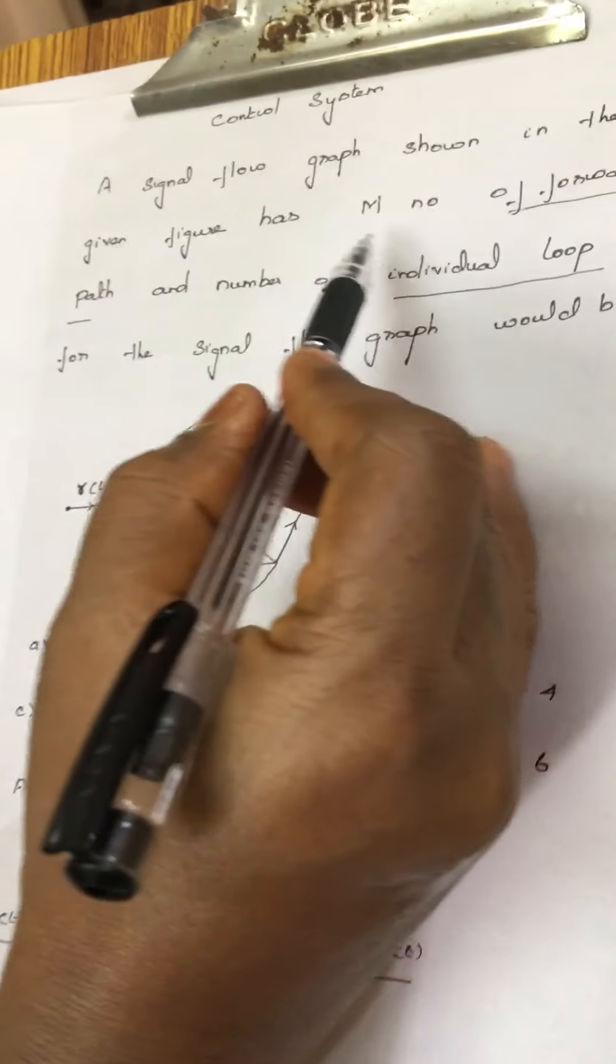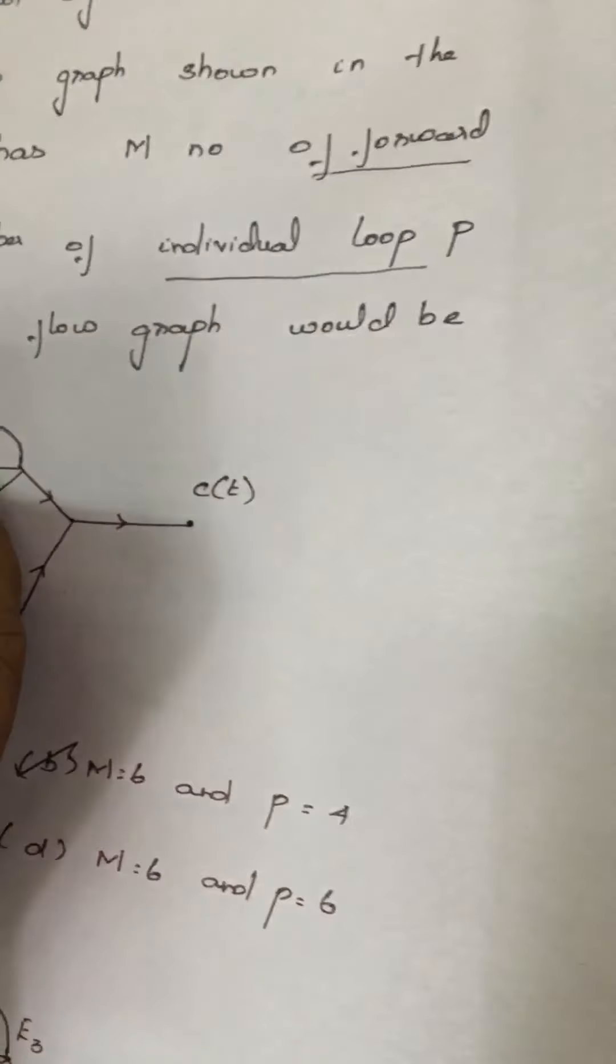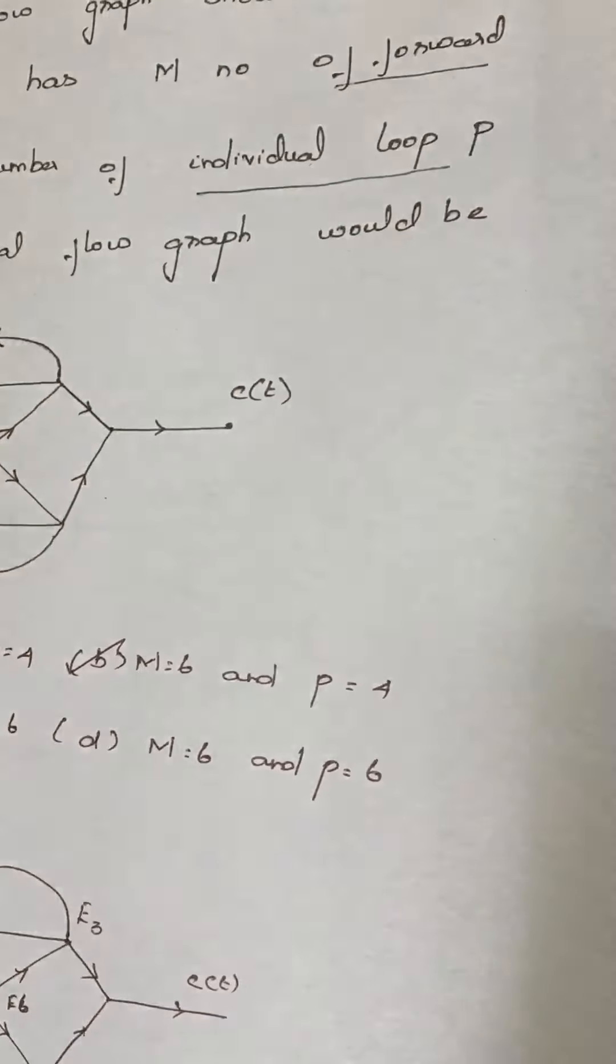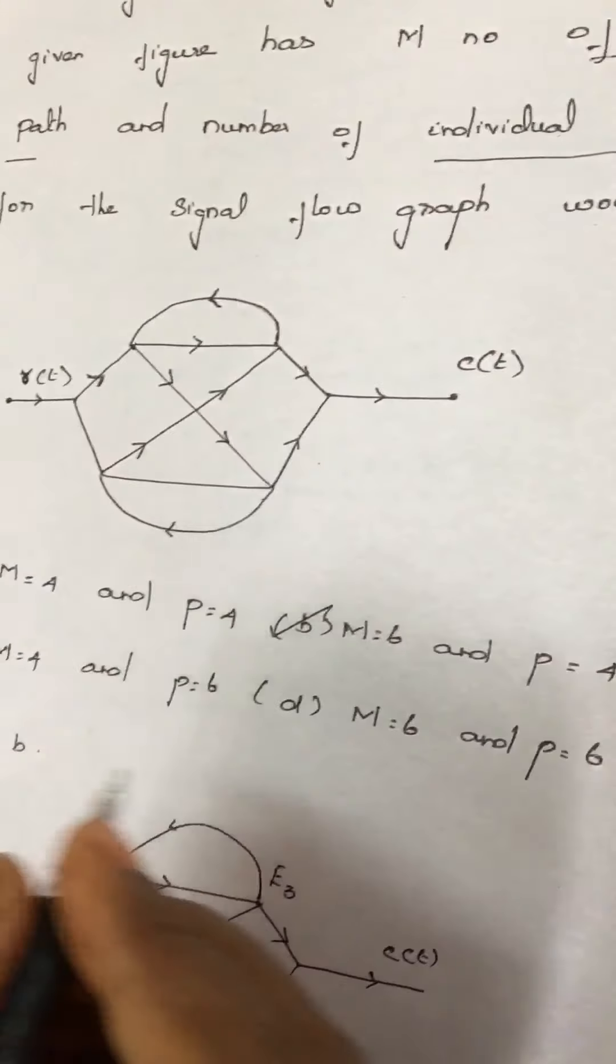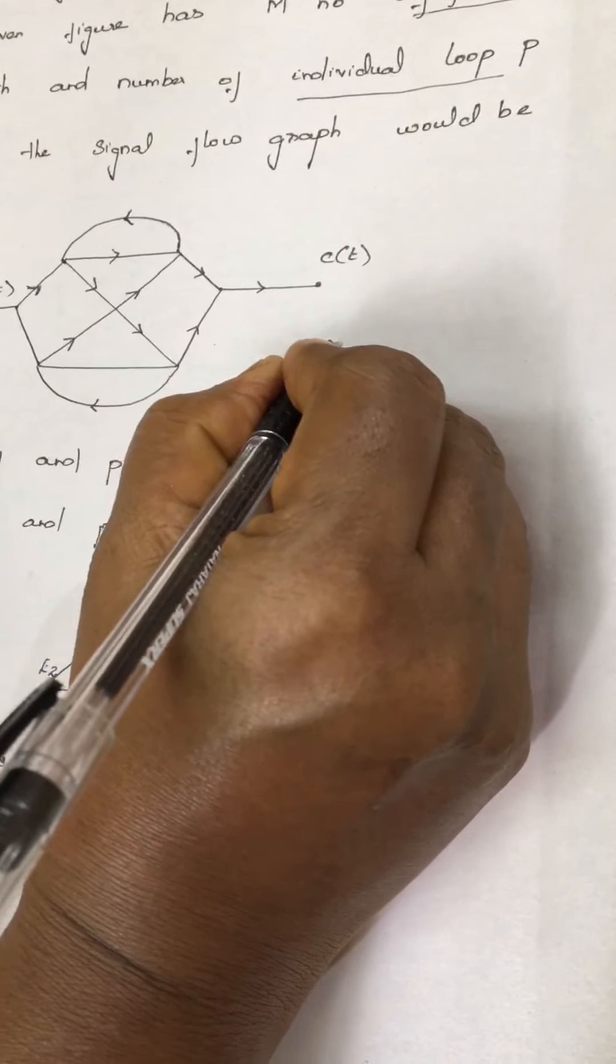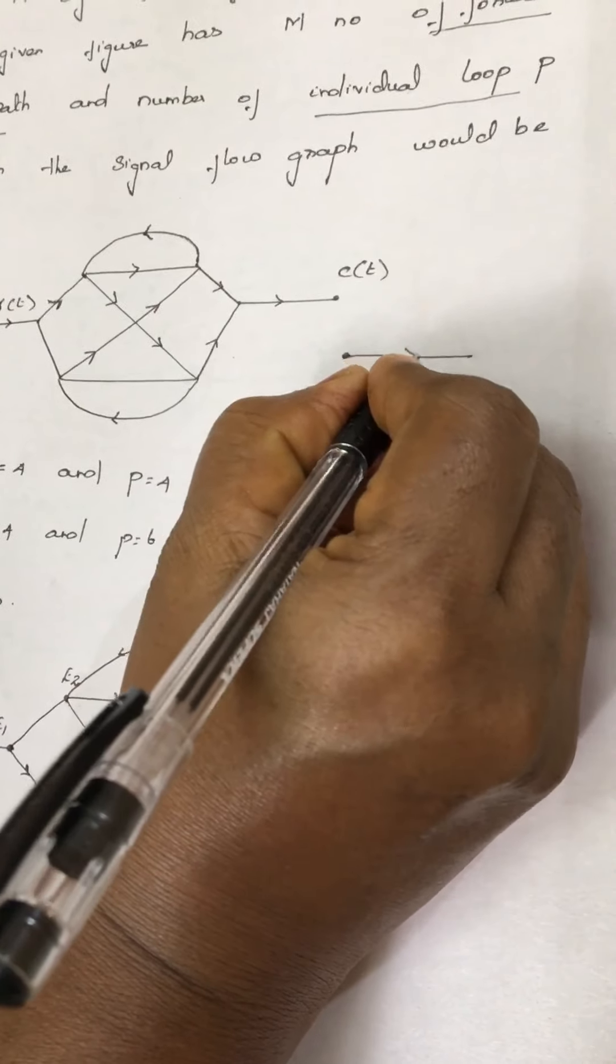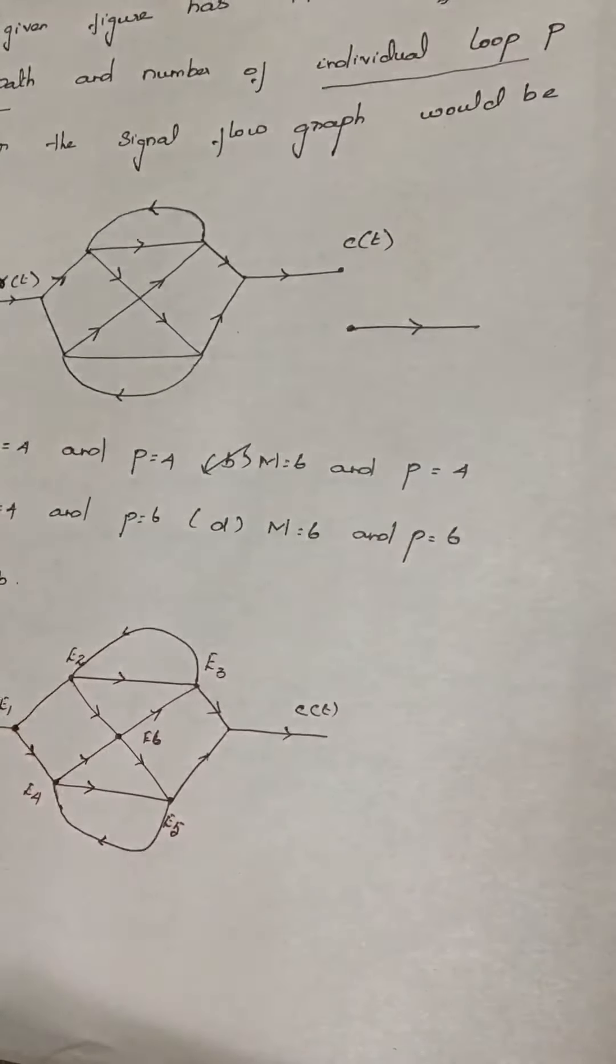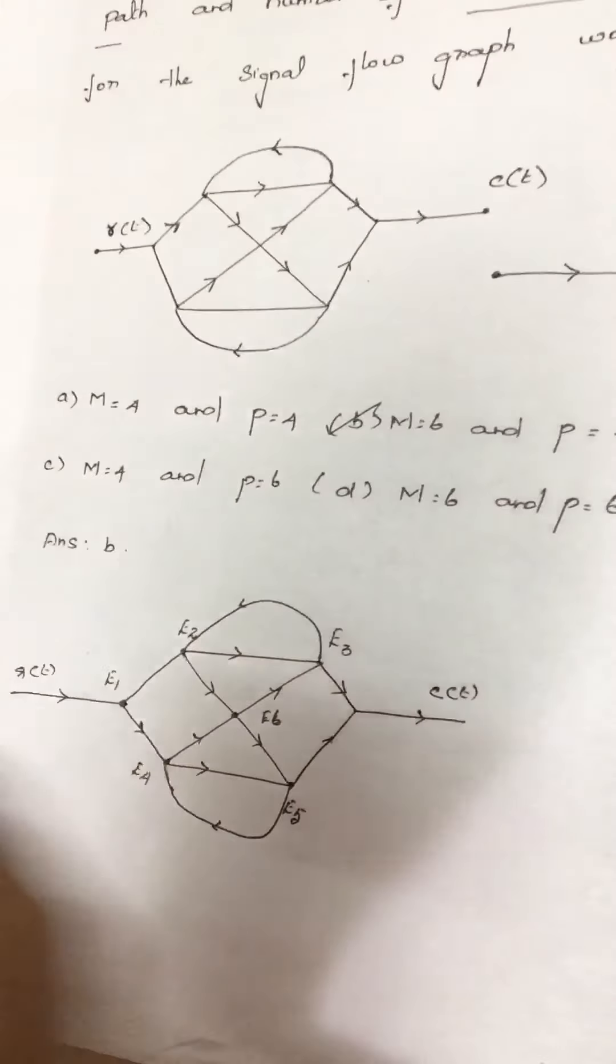What is our question? Find the number of forward paths and the individual loops. A forward path is anything which starts from one point and moves towards with this arrow indication.